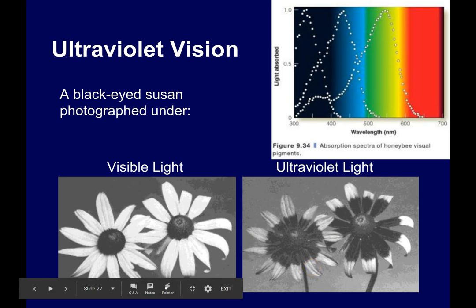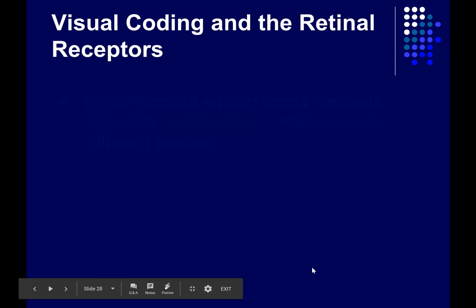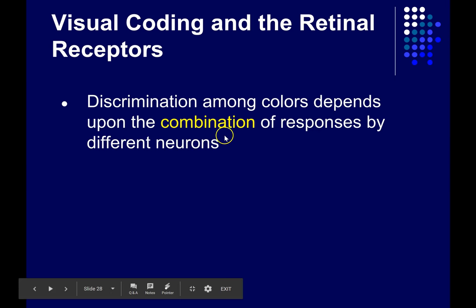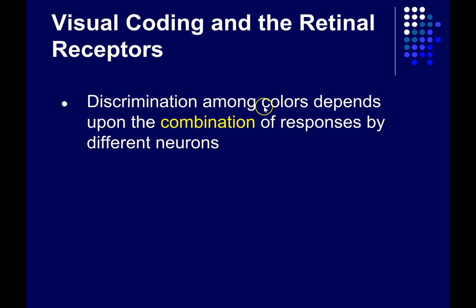The bottom line is that the aspects of the environment that a species is sensitive to is driven by what aspects of the environment are biologically relevant for that species. It's crucial for us to understand that discrimination among colors — being able to tell that one surface is reflecting different wavelengths of light than another — depends upon the combination of responses by different neurons in your visual system.